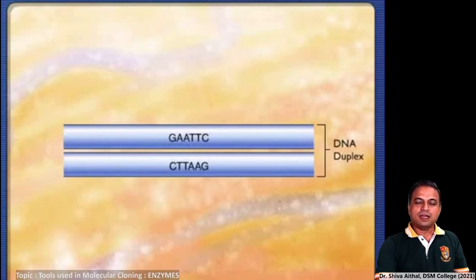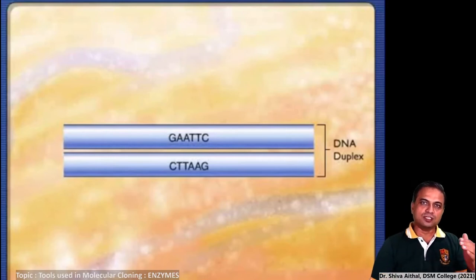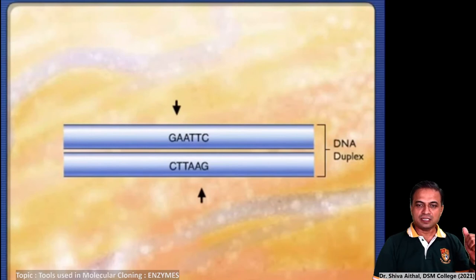Here, I would like to display how restriction endonucleases introduce a cut in the DNA fragment. These are enzymes which cleave the DNA at very specific nucleotide sequences. The sequence recognized is always 4 to 6 nucleotides long.